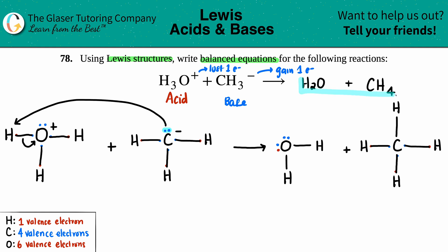So the whole balanced equation would be H₃O⁺ plus CH₃⁻ yields H₂O plus CH₄, and that is the Lewis structures for all of them.